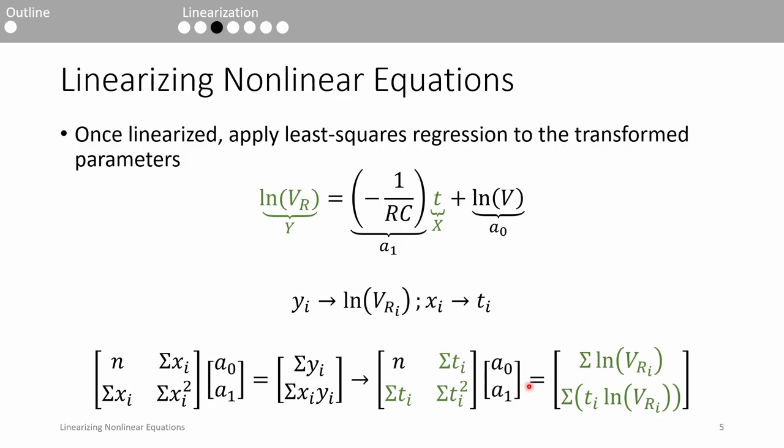Now that we have a linear equation, we can go back to the data and apply least squares regression. We apply least squares regression not to the experimental data we collected, but to the transformed data. The regression process is the same as usual. We can set up the system of equations for a set of X and Y data points. Now, our X data corresponds to the time, and our Y data corresponds to the natural log of VR because T and ln of VR are linearly related.